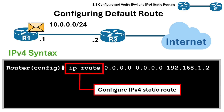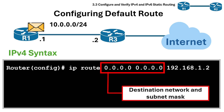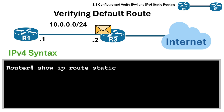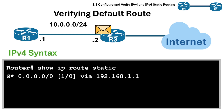The 'ip route' command is used to configure a static route in IPv4. Next is the destination network plus the subnet mask — here 0.0.0.0 0.0.0.0 means any network, i.e., the default route. 192.168.1.1 is the next-hop IP address or gateway where packets will be sent if no better match exists. We can verify the static route with the command 'show ip route static' and look for 'S*' — S means static route and the asterisk means it's a candidate default route.